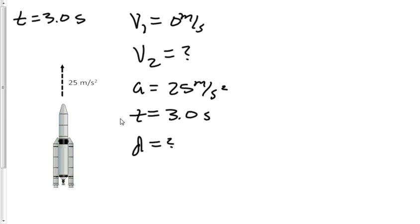So we'll start off, let's just find our velocity 2. Velocity 2 is equal to 0 plus 25 times 3.0. That'll give us a velocity 2 equal to 75 meters per second.